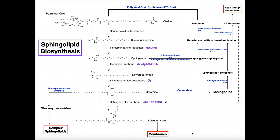You might say that sphingolipids are derived from phospholipids, but the answer is no — they're actually derived from palmitate. We start with palmitate and use the enzyme fatty acyl-CoA synthetase, which uses CoA and ATP to ligate palmitate to coenzyme A, giving us palmitoyl-CoA.